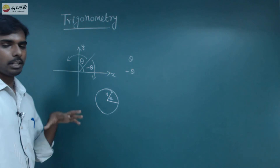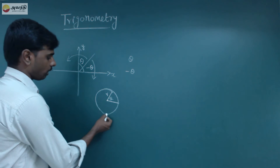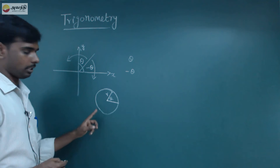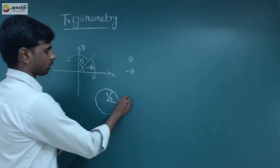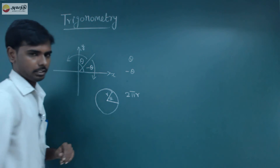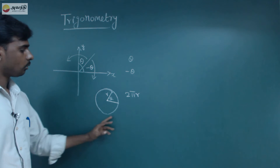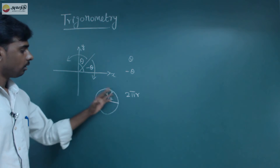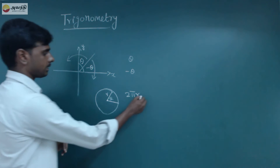How do we calculate the radian? If you look at the perimeter of a circle, what do we know about the perimeter of a circle? It is 2πr. There is a full circle in trigonometry.